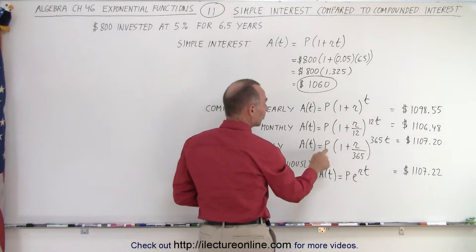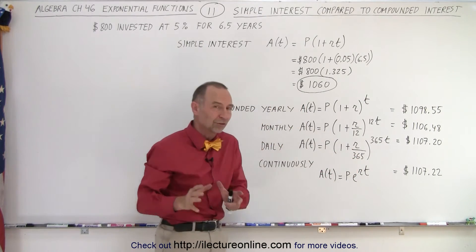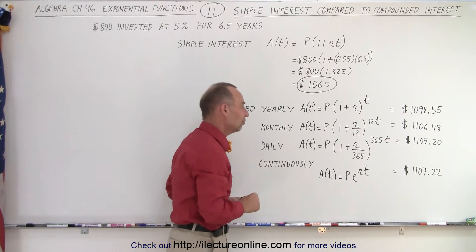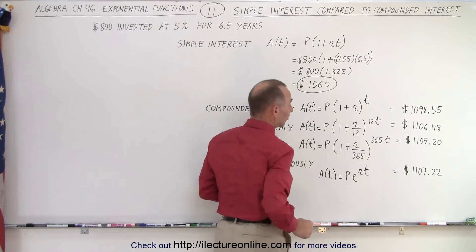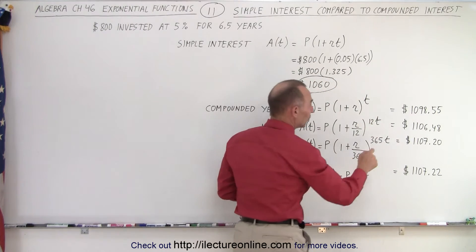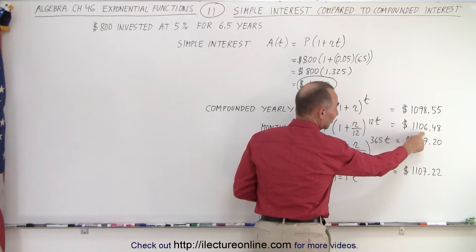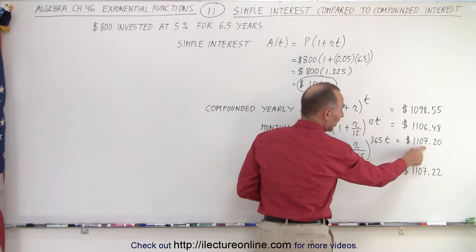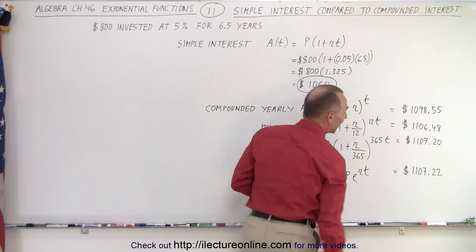And for daily, we have the principal times 1 plus r over 365, because there's 365 times that they calculate the interest and add it to the principal, and then the exponent will be 365 times t, which in this case is 6.5 years. Notice, for daily compounding, we end up with $1,106.48. Daily compounding is $1,107.20, and continuous compounding is 2 pennies more than daily compounding.